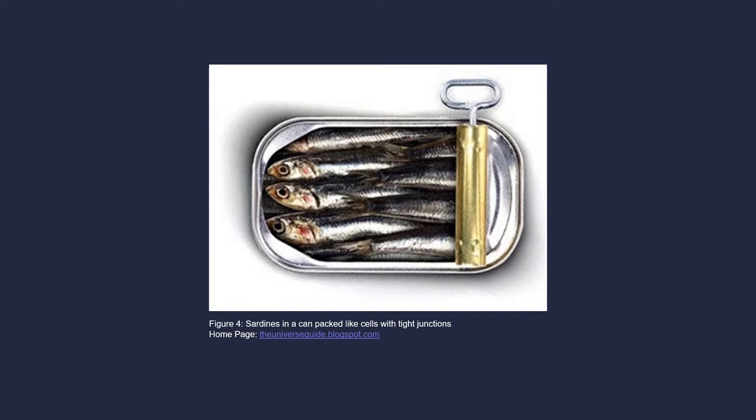Other cell types are packed close to each other like sardines in a can when they form tissues. They join to each other with intercellular junctions.